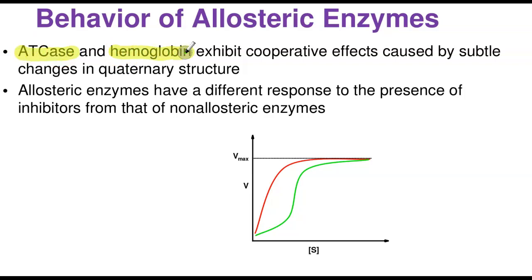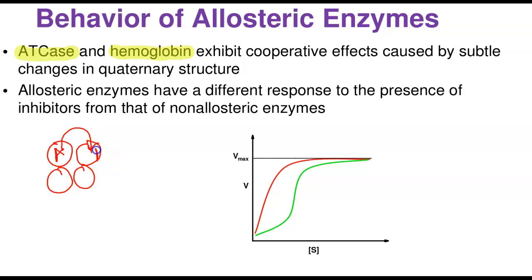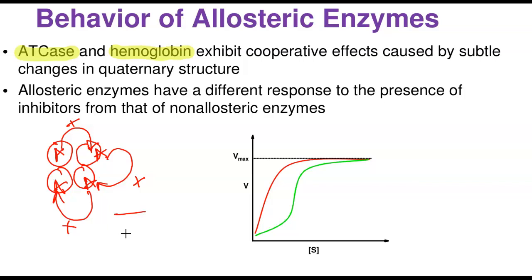Both ATCase and hemoglobin exhibit cooperative activity. Cooperativity is the ability of oligomeric or allosteric enzymes to cooperate: if an activator or inhibitor binds to one subunit, that subunit activates the next, which activates the next — a chain reaction. If you have four subunits, binding in one triggers binding in another, then another, enhancing the overall action. Cooperativity means these various subunits work together to achieve the catalytic goal.